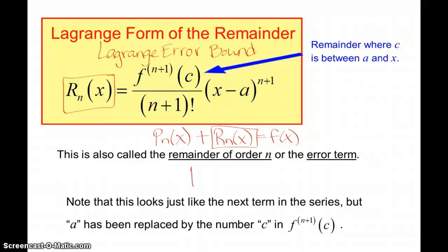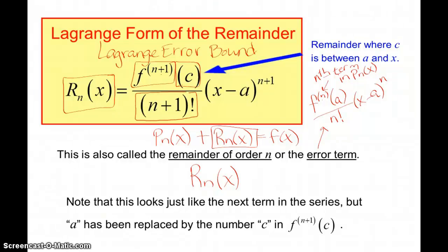This is the remainder of order n. It looks just like the next term in the series. If I was generating f^(n)(a) over n factorial times (x-a)^n, there's our nth term in p_n(x). If we carry this on, then f^(n+1) is simply the next derivative. If this is the sixth derivative, that would be the seventh derivative. We'll talk about c in a minute, but I want you to see that the other elements are the same.